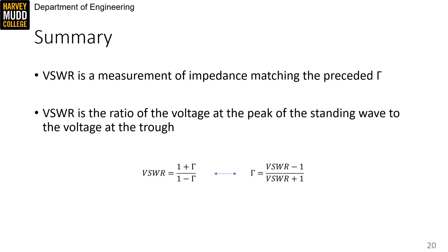So in summary, VSWR is a measurement of impedance matching that preceded gamma. VSWR is the ratio of the voltage at the peak of the standing wave to the voltage at the trough. And finally, it's given by these equations down here. We can find it in terms of the magnitude of gamma, or we can find gamma in terms of VSWR.